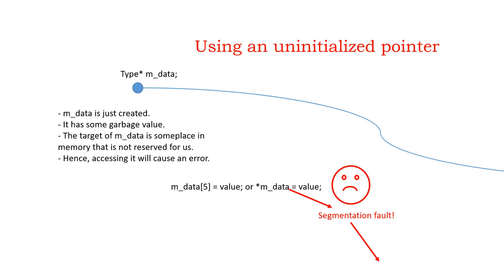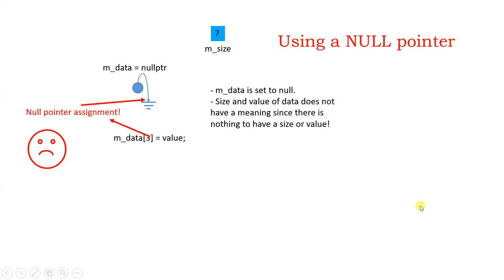That is why we always set our pointer to null. As soon as you create a pointer, you must set it to null, which means it points nowhere. If you try to dereference it, you'll get a null pointer assignment message — which is a useful signal that you did something wrong. It's also a good idea to always keep track of the size of the memory you're allocating, so later you can check if you need more and resize it on the run.